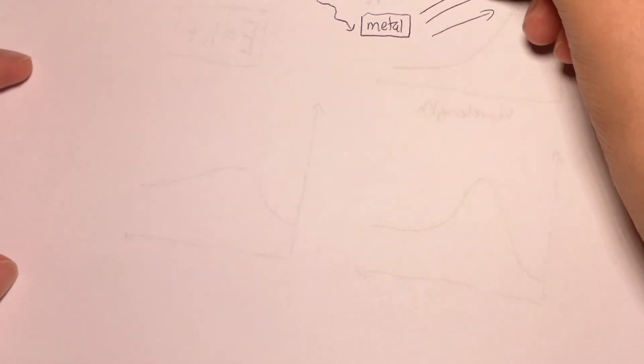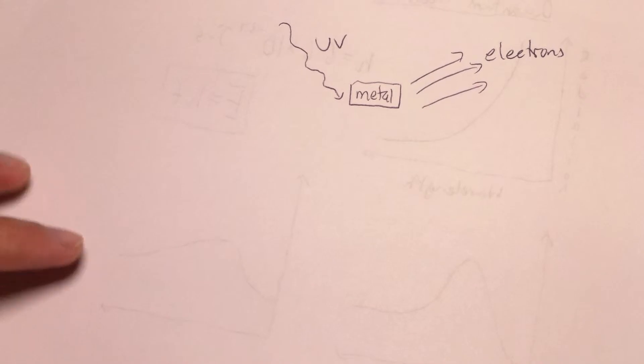So the photoelectric effect is the observance that for some metals, so we have a metal, if it was hit with certain frequencies of ultraviolet light, UV light, then electrons would fly out of it. And no one could really figure out why. And let's delve into this a little bit more. Let's see why it seemed to violate the Maxwellian theory.